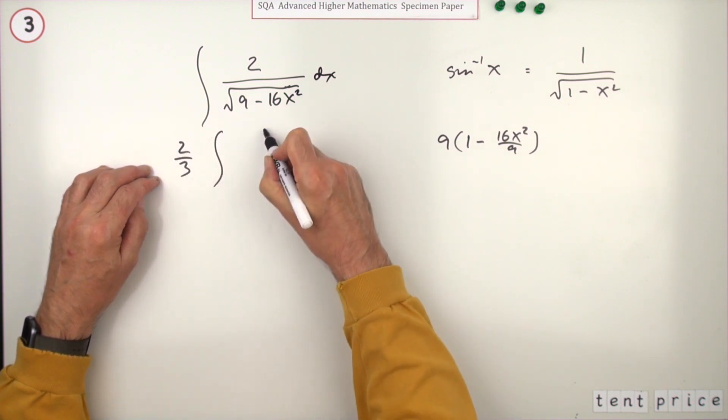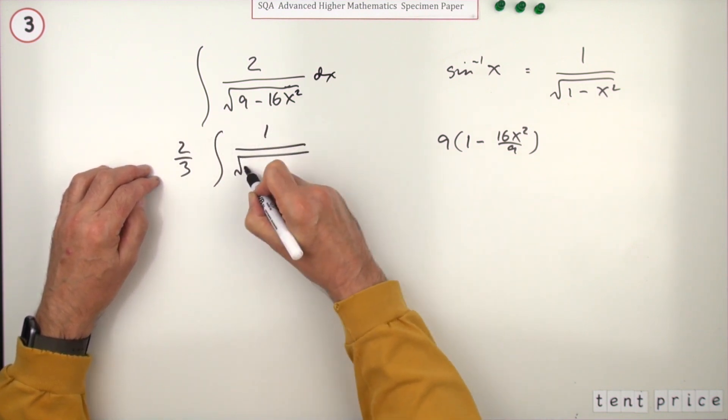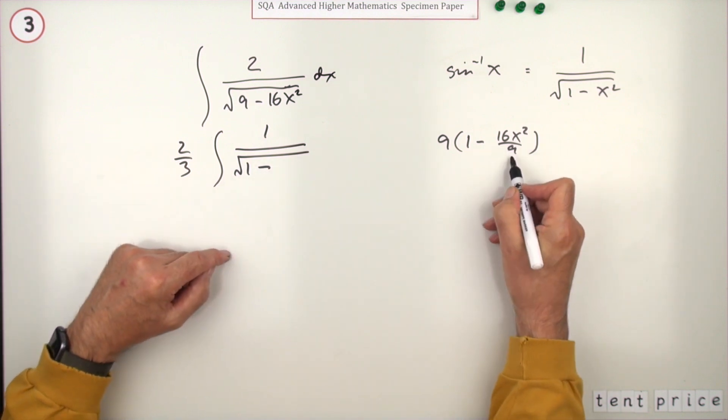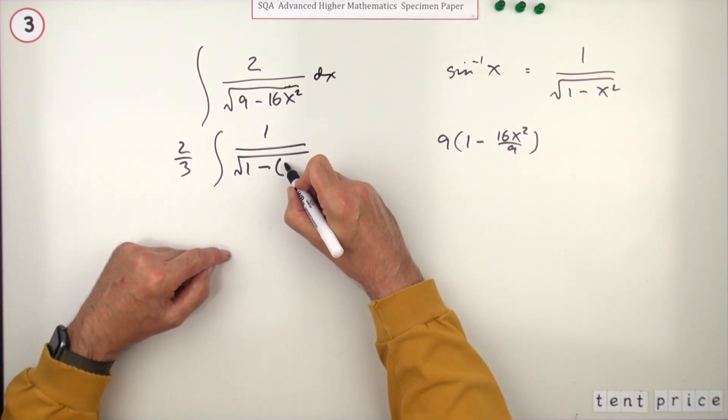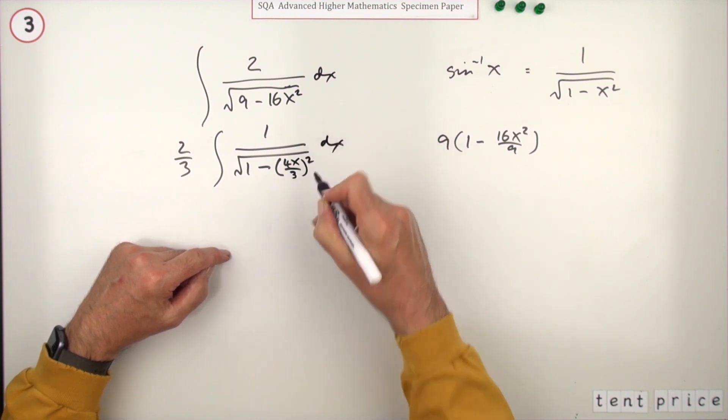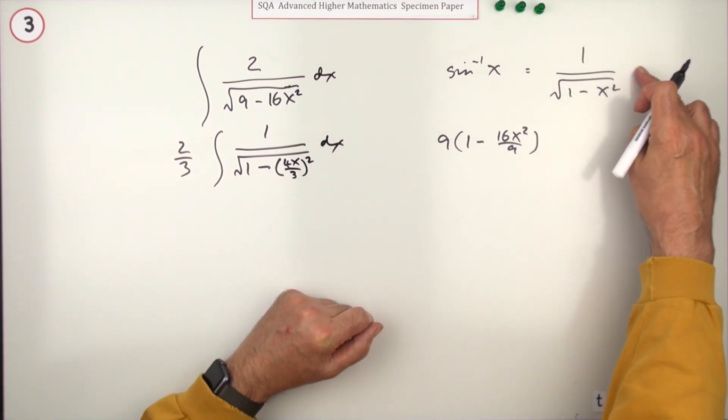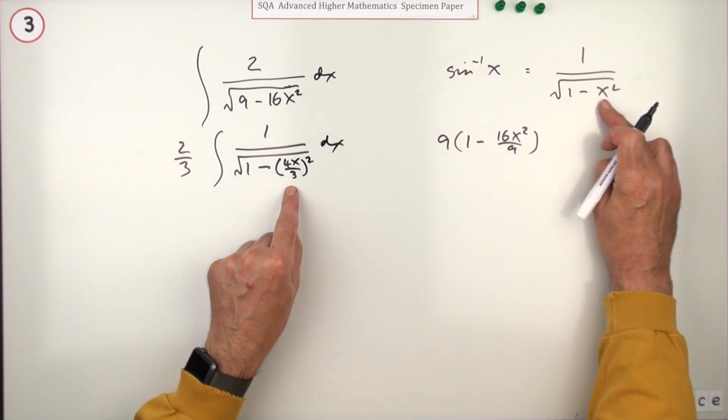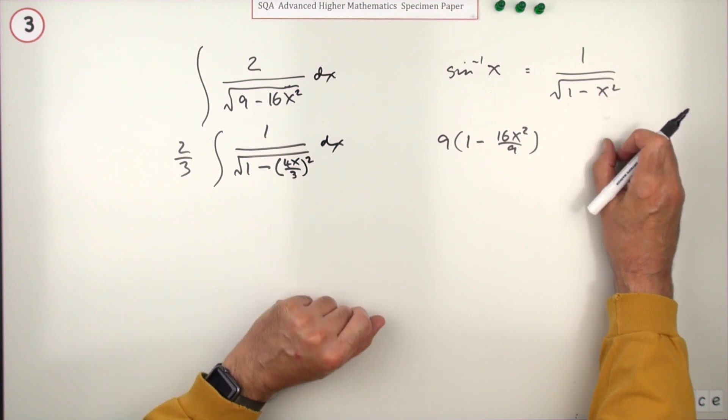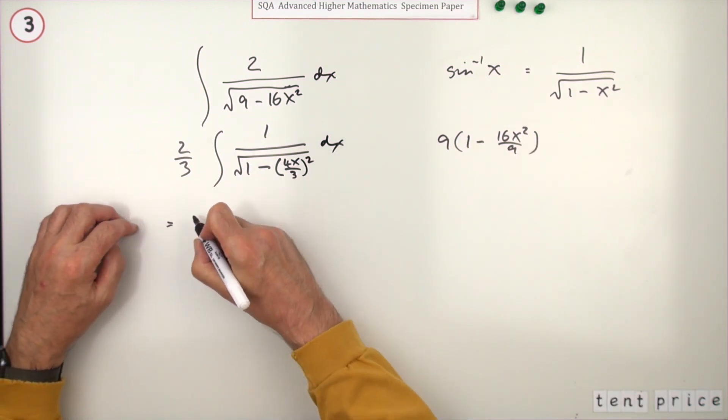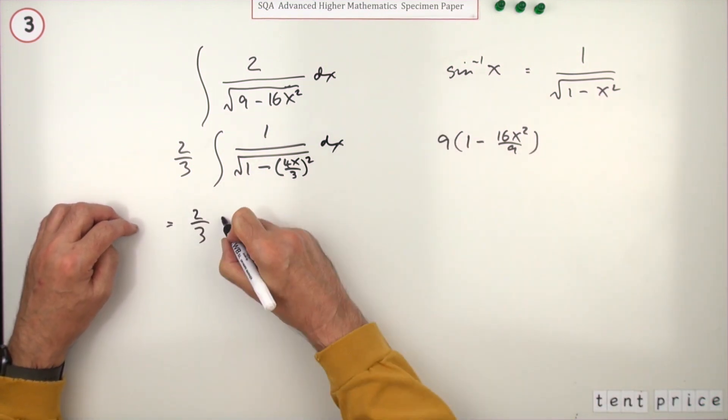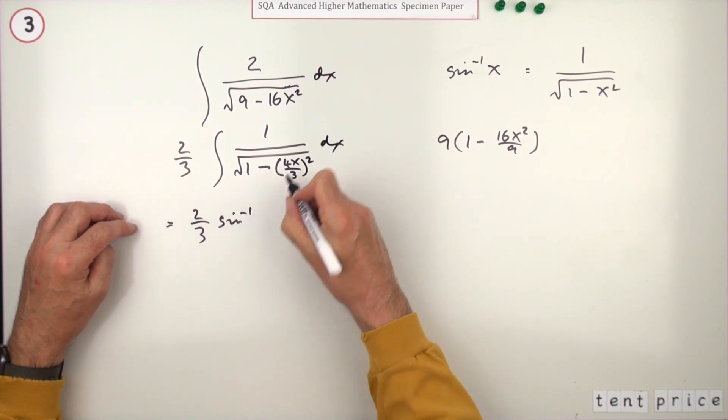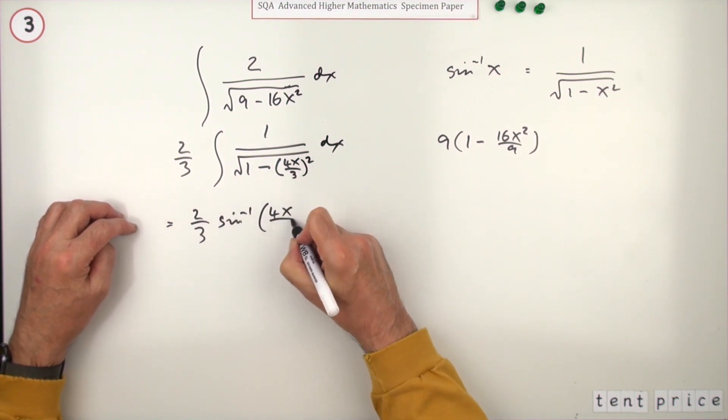Being a square root that would have turned into 2/3 of the integral of 1 over the square root of 1 minus (4x/3)² dx. So now it's in this form where you've got a function of a function - it's not a function of x, it's a function of 4/3 of x. When you carry out that integration it will turn back into inverse sine of 4x upon 3.